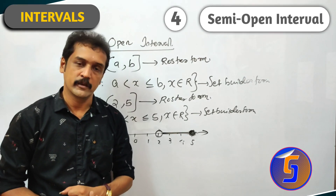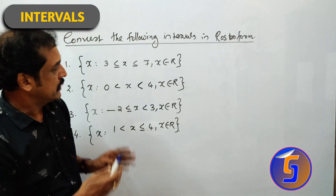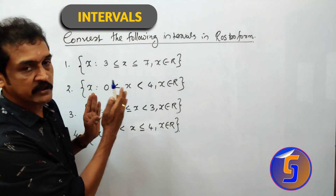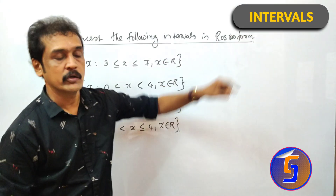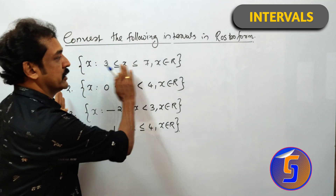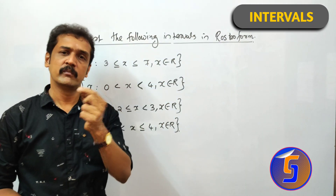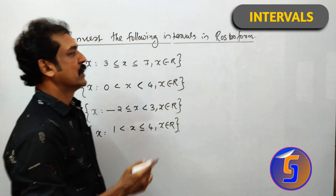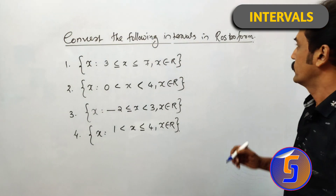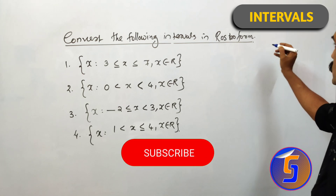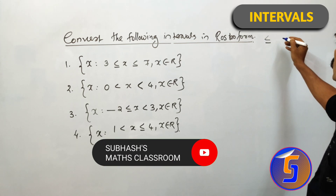Now let's examine the four forms. Convert the following intervals in roster form, set-builder form, and geometrical form.